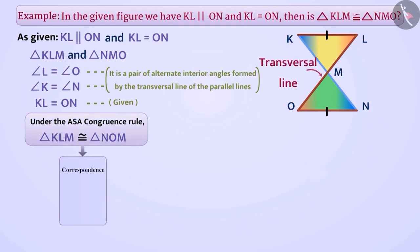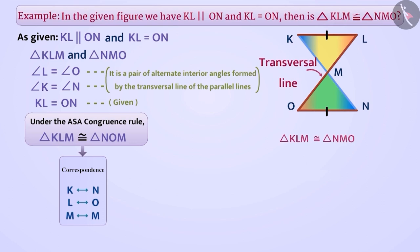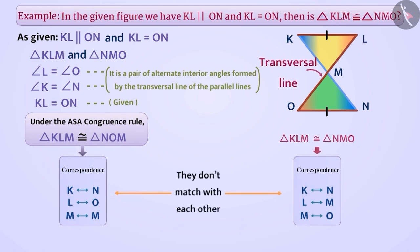Here is the correspondence: K is correspondent to N, L is correspondent to O, M is correspondent to M. But if we look at the given relation of congruence — triangle KLM congruent to triangle NMO — the correspondence of both conditions are not satisfied. Hence, triangle KLM is not congruent to triangle NMO.